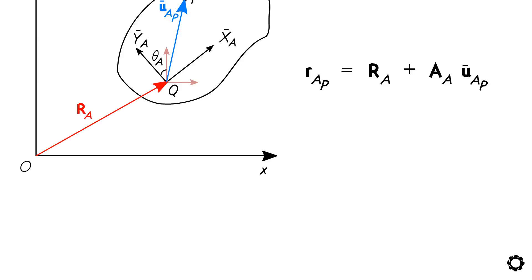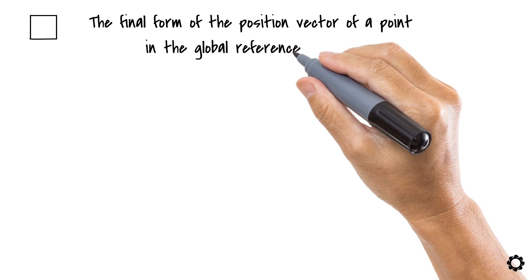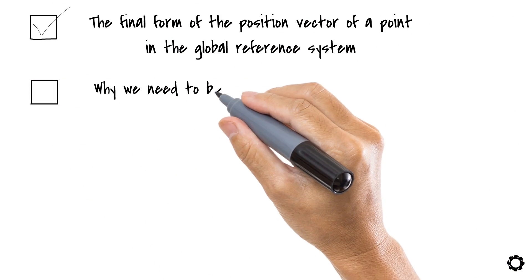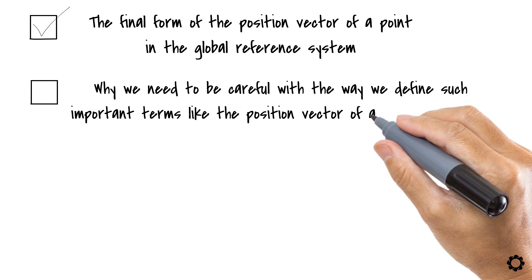Let's recap. In this video, we finally got the final form of the position vector of a point in the global reference system. Also, we understood why we need to be careful with the way we define such important terms like the position vector of a particle or point.